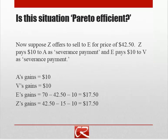The answer is no. Imagine that people aren't obliged to stay with their trading partners. Suppose Zeke goes ahead and sells to Epple for a price of $42.50, and they pay severance payments or compensation to the people they were going to trade with. If we work this out, Allison gets $10 of benefits instead of $7.50, Vanessa gets $10 of benefits, and Epple and Zeke each get $17.50 instead of the $7.50 they got before.